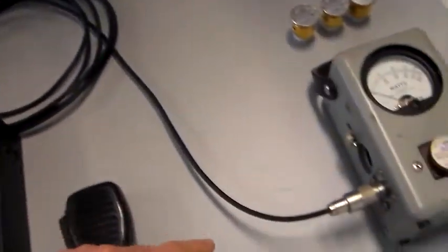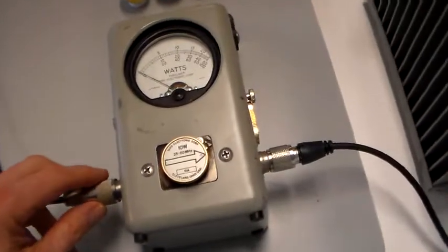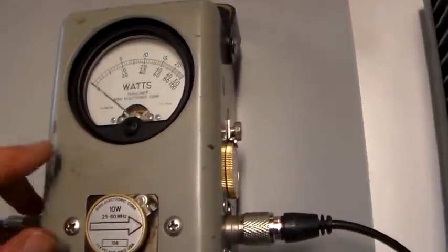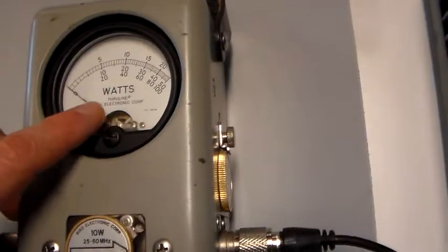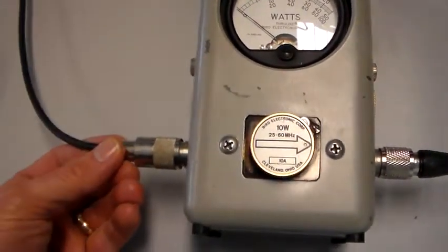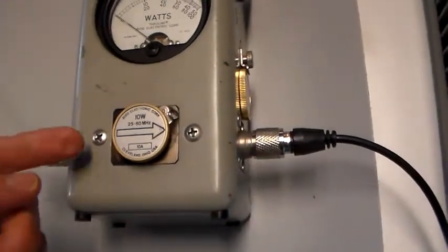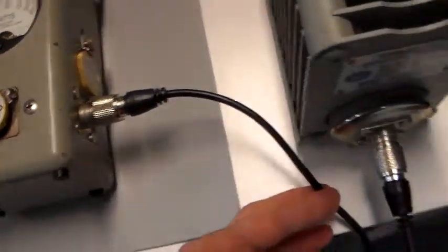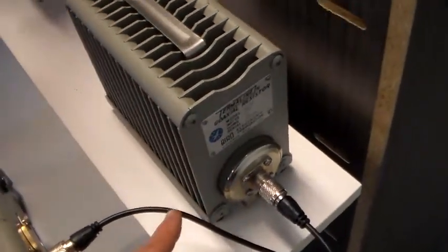In this case, the wattmeter is manufactured by Bird Electronic Corporation. It's what they call their through-line meter, which means the power comes in through one connector, comes out through the meter to another cable into, in this case, a dummy load.